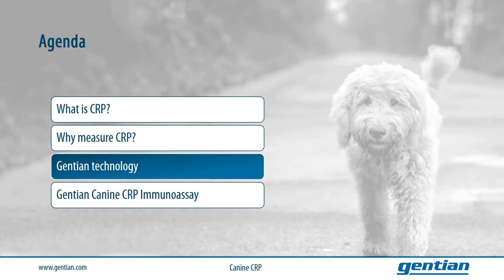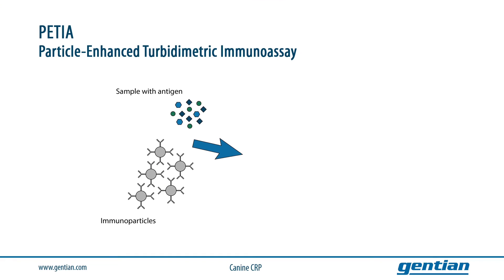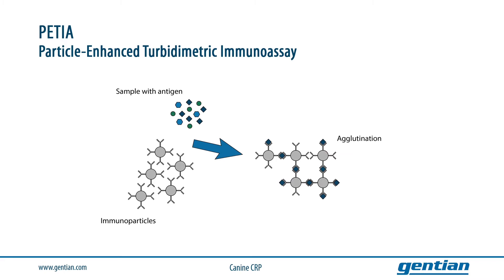Let us come to the second part of this webinar and take a look at the technology behind the Gentian immunoassays. The Gentian assays are based on immunoparticles, which are small beads coated with a specific antibody. The immunoparticles are mixed with the sample containing several different antigens including the target antigen — in this case serum or plasma — and the target antigen is the canine CRP protein. The mixture of immunoparticles and antigen leads to agglutination because the same antigen can be bound by several antibodies on different beads, so they are cross-linked together by the bound antigen.